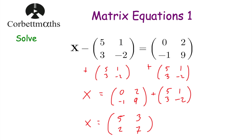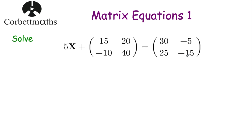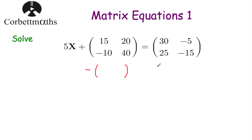Okay let's have a look at our next example. This time we've got the matrix equation 5x plus the 2 by 2 matrix [15, 20, -10, 40] is equal to [30, -5, 25, -15]. To solve this equation, like we would solve a normal equation, we want to get rid of this matrix and then get rid of the times by 5. So let's get rid of this matrix from the left-hand side to begin with, taking it away from both sides.